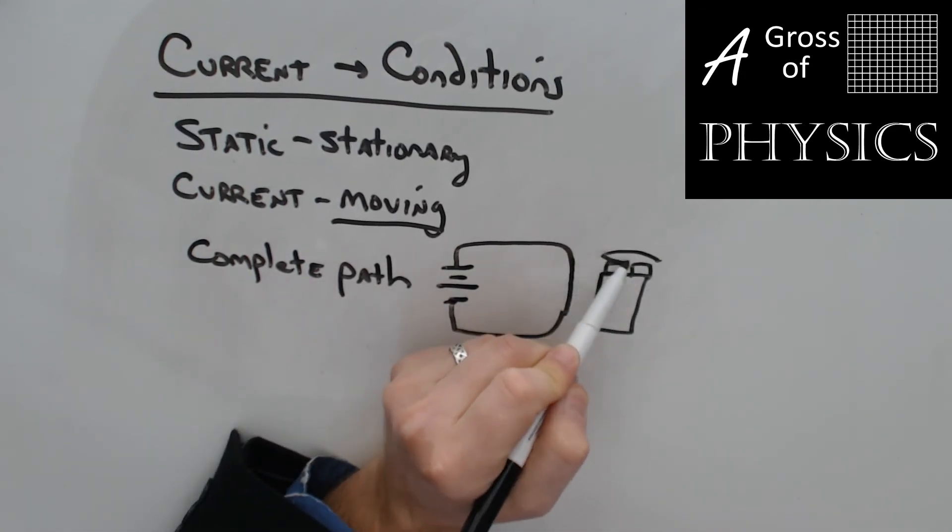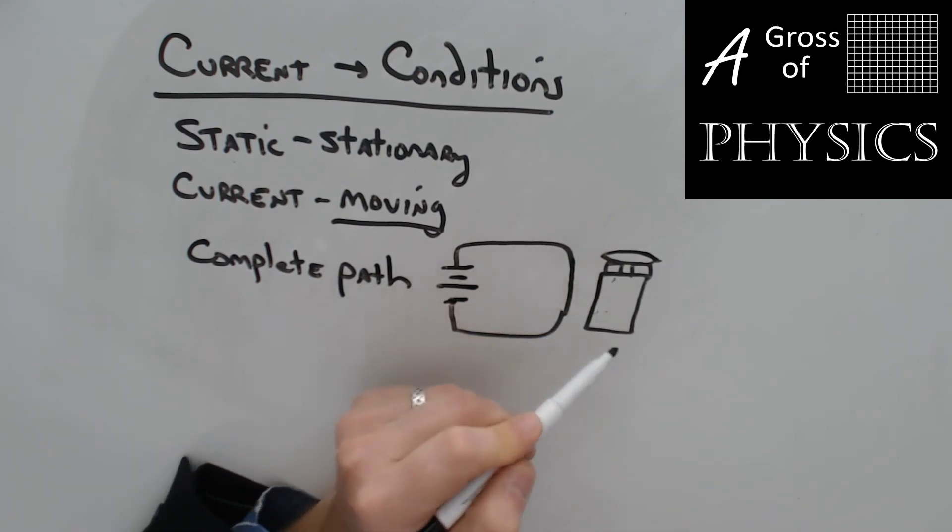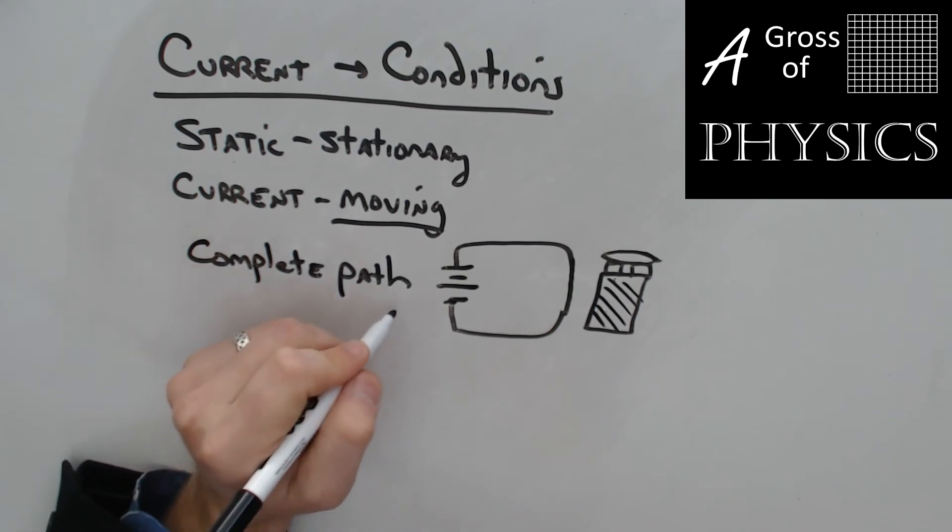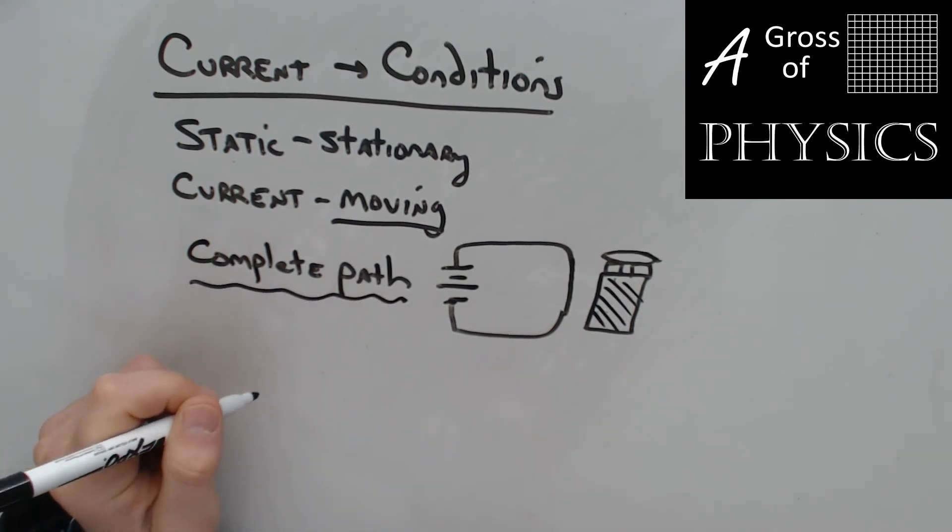If a coin were to touch both ends and complete the circuit, that could actually cause this to short circuit and melt in your pocket and actually burn you with the battery acid that's in the battery itself when it explodes. So it's important to not have batteries in your pocket and especially batteries with loose change as well. So the first thing you need to have is a complete path, getting back to our condition discussion.